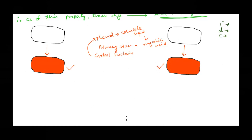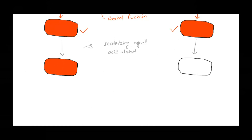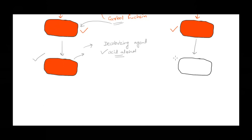Before the decolorization step, we allow the smear to cool down. Once it cools, the waxy layer of the cell becomes harder, making it even more difficult for such cells to decolorize. We use acid alcohol — HCl and ethanol — as the decolorizing agent. The main reason acid fast cells resist decolorization is that carbol fuchsin is much more soluble in the waxy layer of the cell wall than in acid alcohol, so the stain resists removal and they remain red in color.